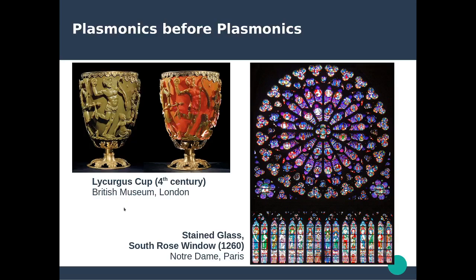Before plasmonics existed as a formal field, gold and silver nanoparticles were used in glass to produce beautiful colors. Two famous examples are the Lycurgus Cup, a Roman cup from the fourth century: illuminated from outside it appears green, and from inside in transmission it appears red — properties due to plasmons, which we will discuss in Chapter 9. Similarly, the different colors in stained glass, such as the rose window of Notre-Dame in Paris, are due to the different sizes of gold and silver nanoparticles embedded in the glass.